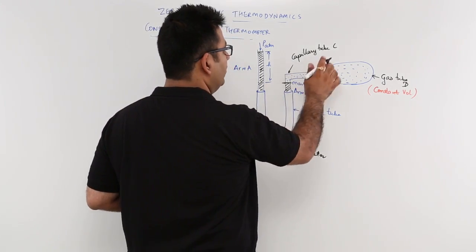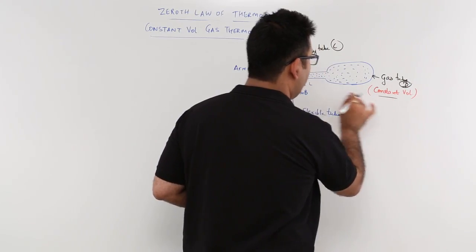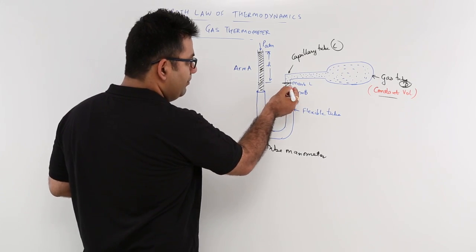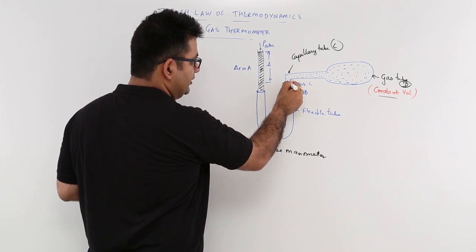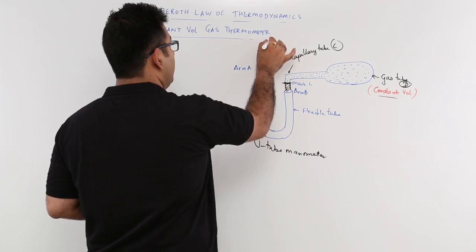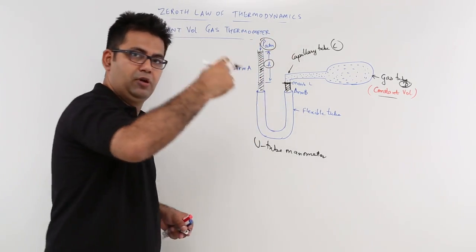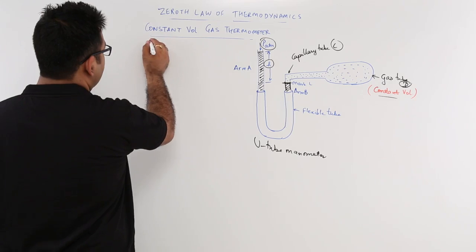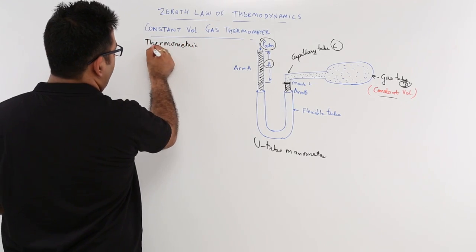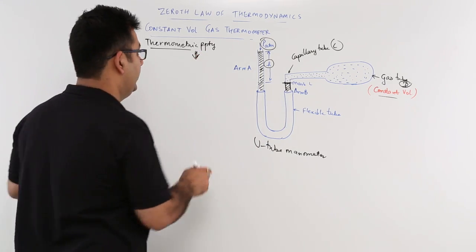You have a capillary tube C and a gas tube D. This gas tube has a constant volume of gas inside it. Arm B needs to have the mercury up to mark L only. You maintain that by varying the height of this column — when you vary the pressure, the height of this column would vary. So in this, the thermometric property is not volume, not height, but it is pressure.